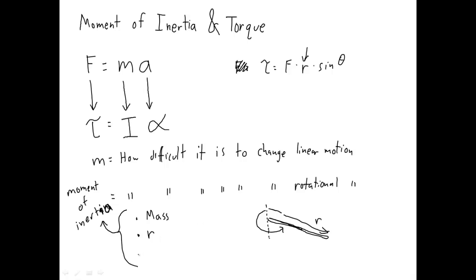Then the last thing is shape. Shape determines moment of inertia. If I had a sphere with mass M, radius R — same mass, same radius — versus a disk, because they're different shapes they will have different moments of inertia. So mass, lever arm, and shape all go into moment of inertia.